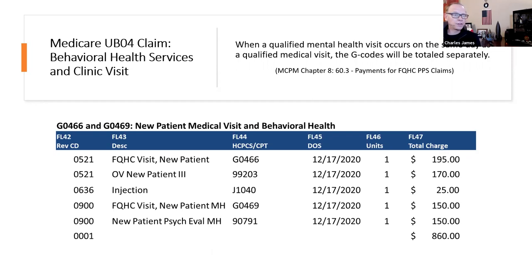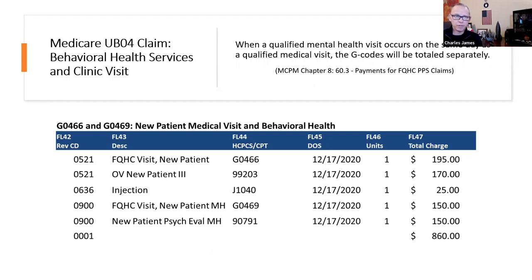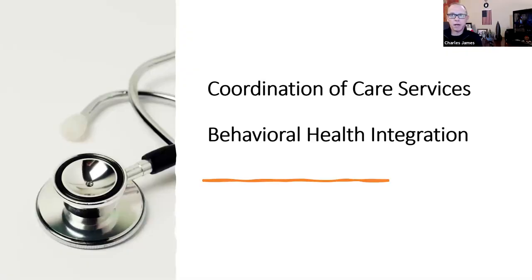So this is our vanilla behavioral health billing: our licensed clinical social worker or clinical psychologist sees the patient, does a face-to-face visit, and that's how we build those. Fairly straightforward — not a lot of complicated thought processes behind those. But let's talk about behavioral health integration and psychiatric coordination of care services, and what I think many of us have been missing.